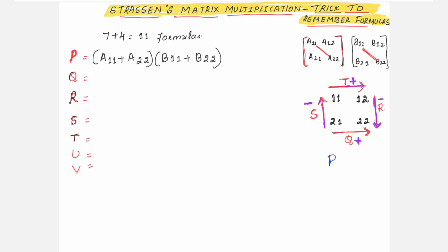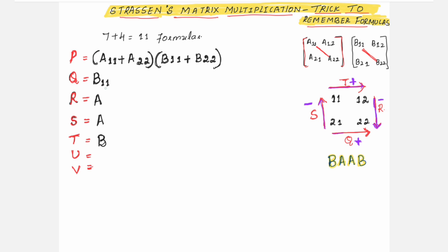One more thing to write down here: write the letters B, A, A, B for Q, R, S, T respectively. This indicates which matrix is outside the bracket. Now write the subscript indices: for the outside term, use 11, 22, 11, 22 in the same order. So Q has B11 outside, R has A22 outside, S has A11 outside, and T has B11 outside — following the 11, 22, 11, 22 pattern.